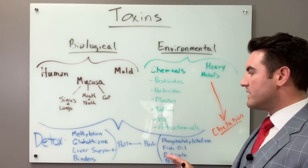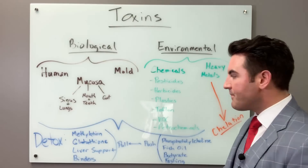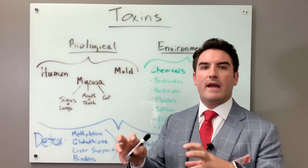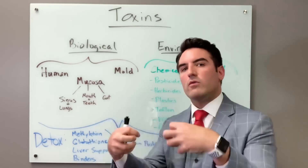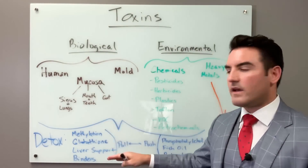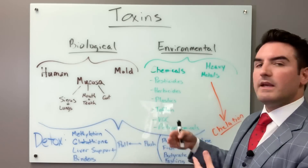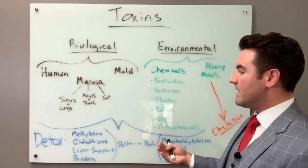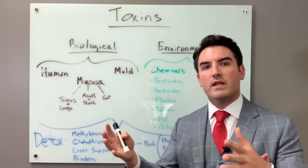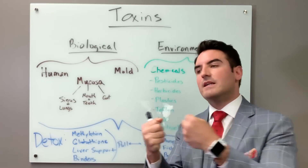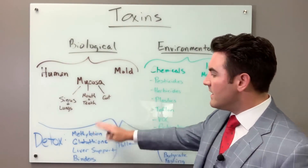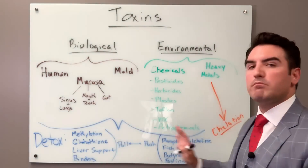Glutathione is your master antioxidant — it's the magnet that grabs onto toxins and carries them to the stool, urine, and sweat to formally eliminate them. To create glutathione you need methylation, which also helps detoxify substances to get them ready to be escorted by glutathione. This is what we call the pull mentality: once a toxin is released from storage, the liver detoxifies it, glutathione grabs it like a magnet, and pulls it to the detox organ — whether sweat, stool, or urine.